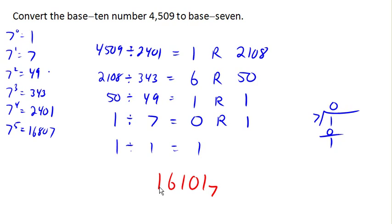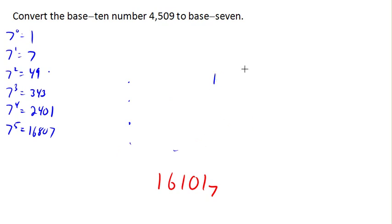And so there is our base 7 equivalent number. Now, of course, we can always check our work here by going backwards the other direction and converting this back into a base 10 number. Because we know that this first number is supposed to be a 1's place. This number is supposed to be a 7's place. This number is supposed to be a 7 squared place. This number is supposed to be a 7 cubed place. And this number is in the 7 to the 4th power place. And so if we calculated this out, we could double-check that it does, in fact, compute back to the base 10 number, 4509.